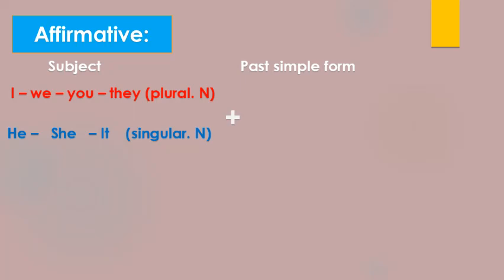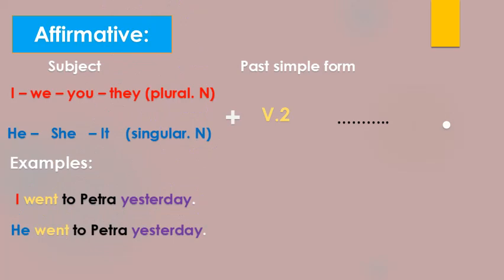If the subject is I, we, you, they or any plural noun, or he, she, it or any singular noun, whether the subject is plural or singular, all of them take verb 2. Then we complete the sentence. Here we have examples: I went to Petra yesterday. Another one: he went to Petra yesterday.